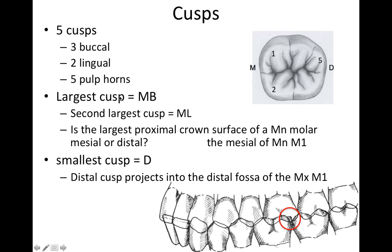The largest cusp is the mesial buccal, and the second largest is right behind it. For board exam purposes: if asked which proximal surface of the mandibular first molar is largest — mesial or distal — the answer is mesial. The smallest cusp is the distal cusp.